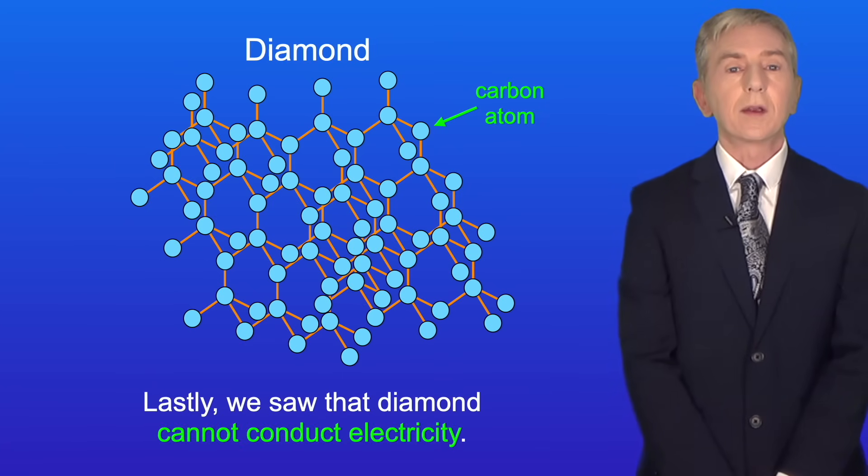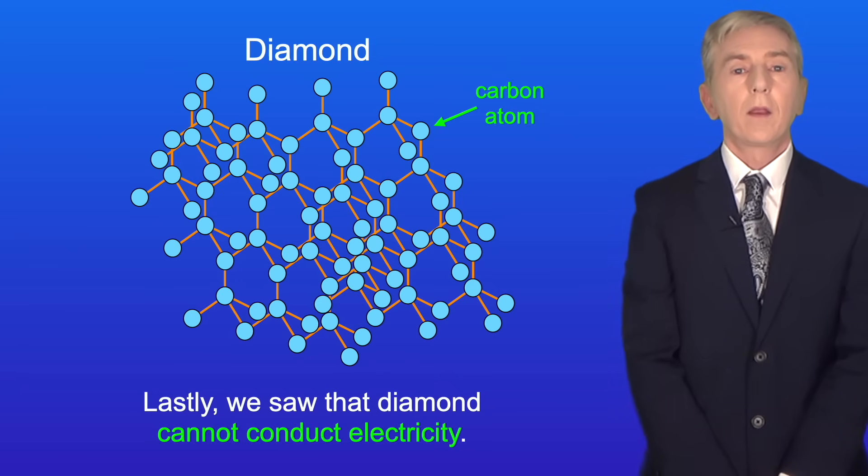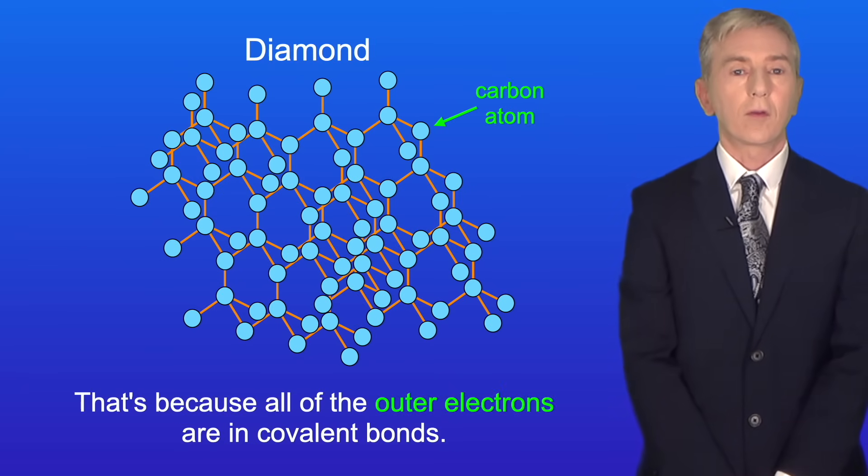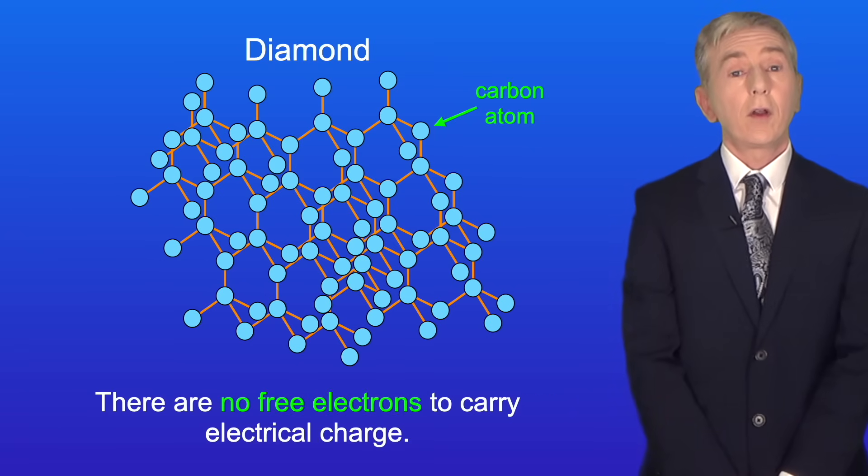Lastly we saw that diamond cannot conduct electricity. That's because all of the outer electrons are in covalent bonds and there are no free electrons to carry electrical charge.